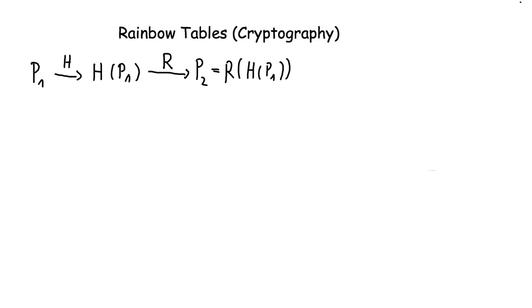We repeat this process as often as we like. So let's say we do it again and so we hash this, get the hash of p2, use the reduction function again to get p3.